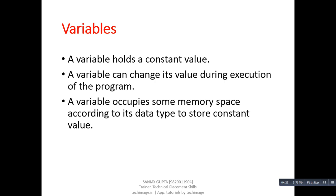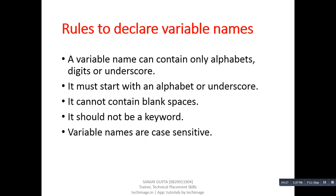Now, rules to declare variable names. Similar to email IDs, there are some rules which are predefined for declaring variable names. First one is, a variable name can contain only alphabets, digits and only one special symbol. That is underscore.